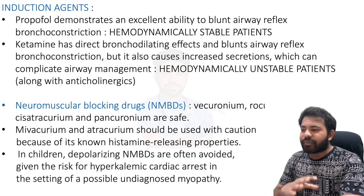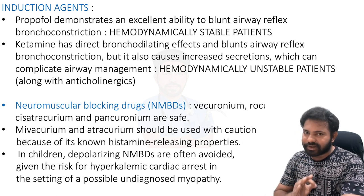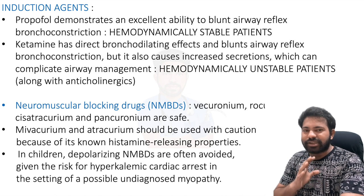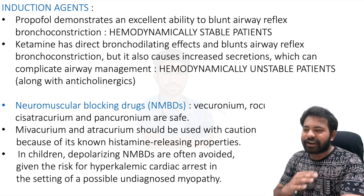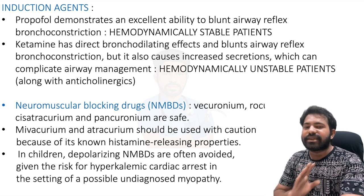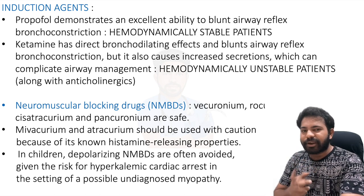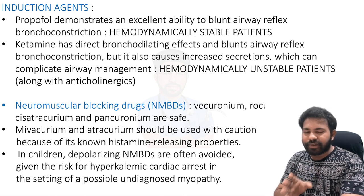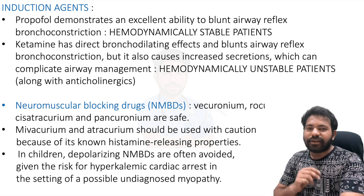Regarding induction agents: propofol demonstrates an excellent ability to blunt airway reflexes and bronchoconstriction, so it is preferred in hemodynamically stable patients. Ketamine is a direct bronchodilator, blunts airway reflexes and bronchoconstriction, but causes increased secretions — supplement with glycopyrrolate or atropine as premedication before ketamine. Ketamine is the drug of choice in hemodynamically unstable asthmatic patients.